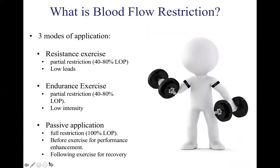So what is blood flow restriction? I like to split it into three different applications. The first is resistance exercise with blood flow restriction, which involves partial restriction of blood flow to the working muscles with prevention of blood returning to the heart. The pressures used are between 40 to 80 percent of an individual's limb occlusion pressure, with 100 percent being the minimum pressure that fully occludes all blood flow. The loads used are generally low, approximately 20 to 30 percent of your one repetition max, with no real added benefit of using higher loads.